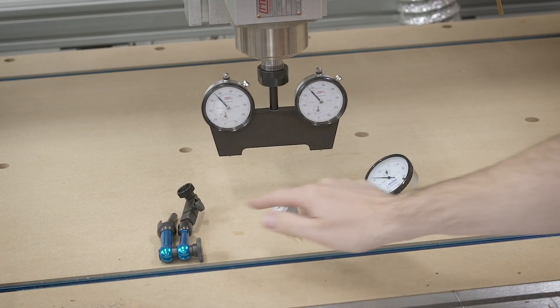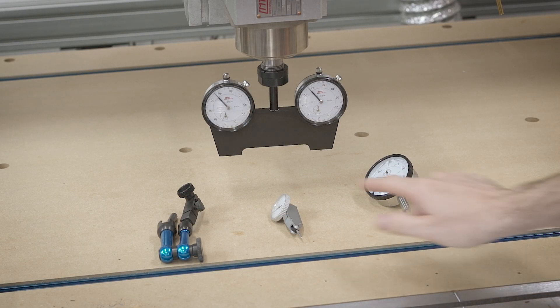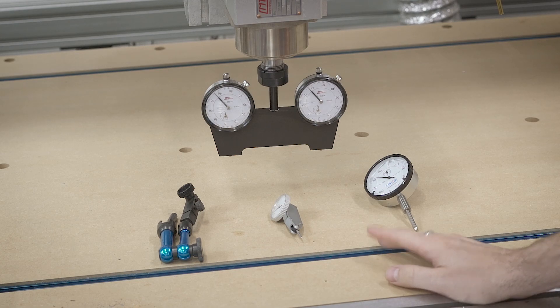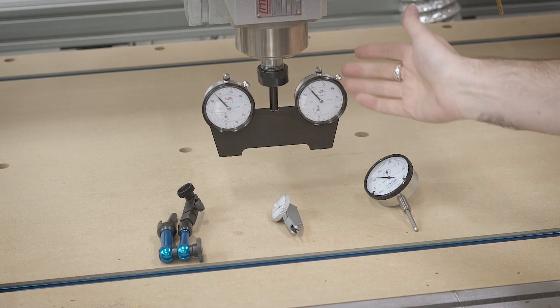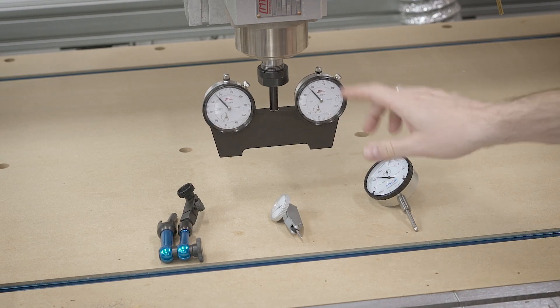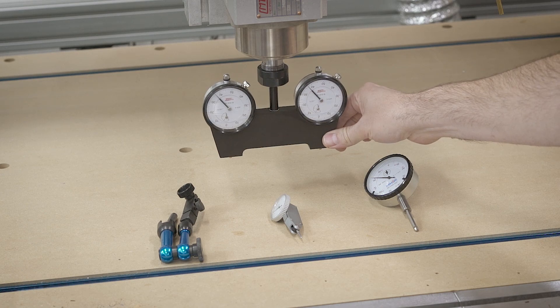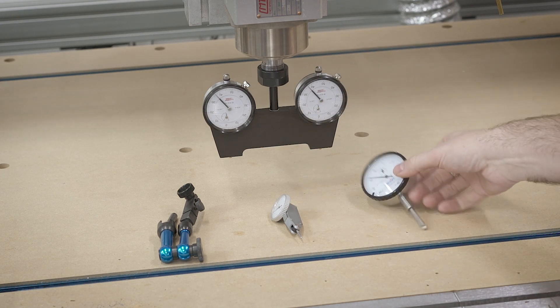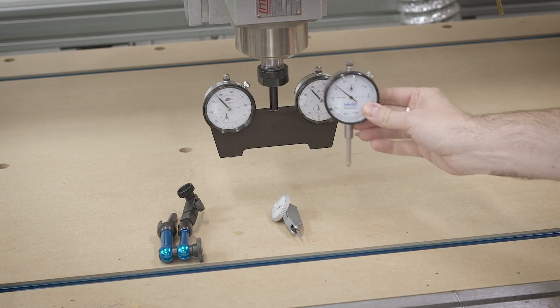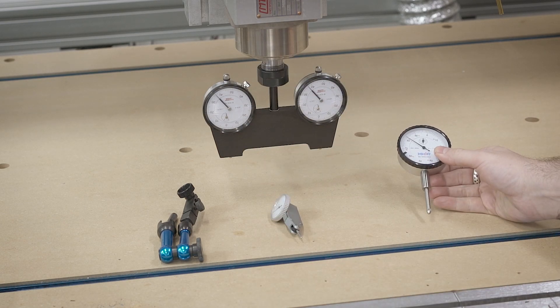To tram your router you're gonna need some measurement tools. I've got three different options here in front of you. This is the one that I'm going to use. This is a tramming square. This really is the ideal way to do this. Most people are probably not going to have one of these but the process really doesn't change a whole lot. It's basically two indicators on either side so that you can see both readings at the same time.